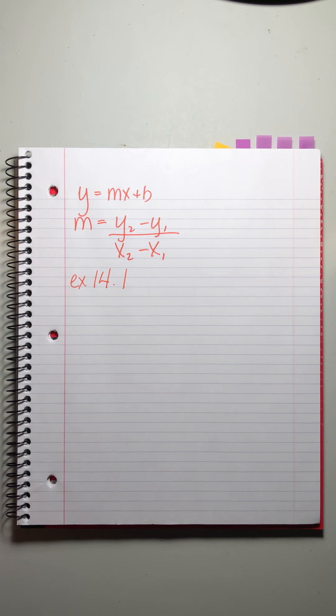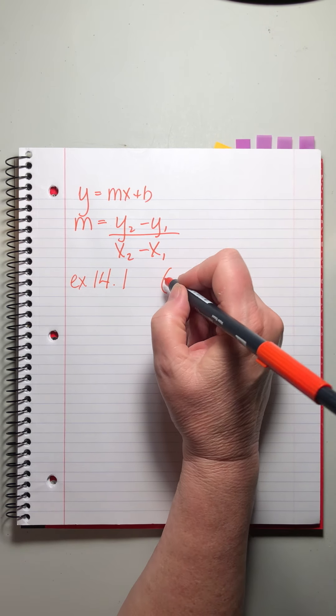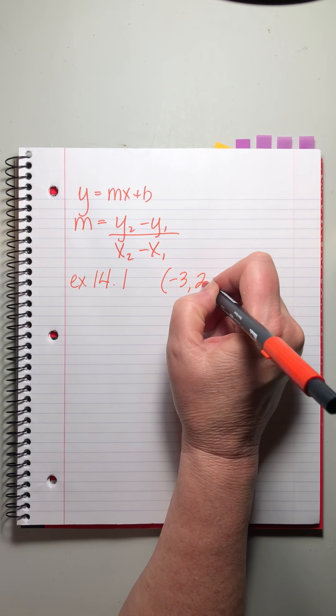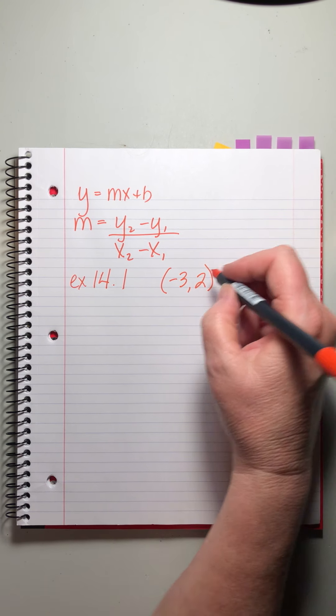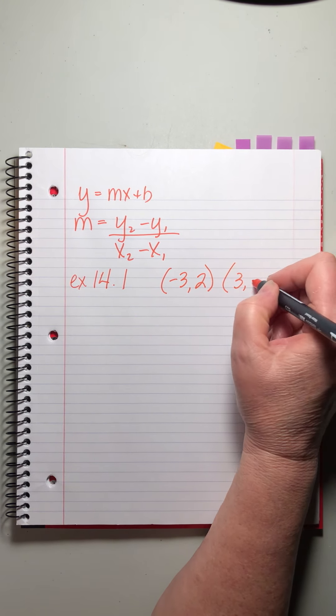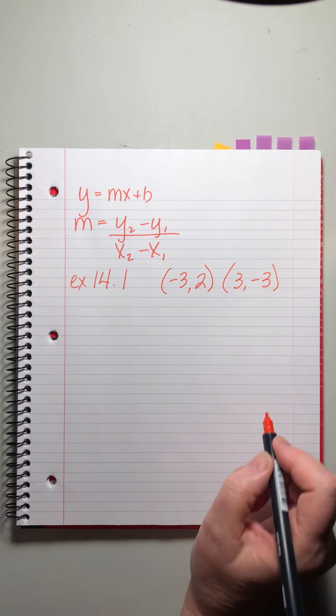Point one. John says, find the equation of the line that passes through, and then he gives us two pairs of points, minus three, two, and three, minus three.